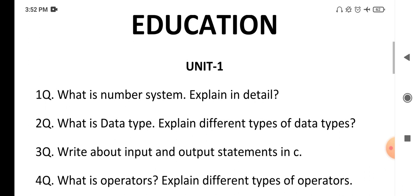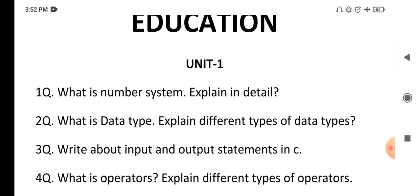The next question is: what is a data type and what are the different types of data types? A data type is nothing but a type of value which we can store in a variable. Without the data type concept, we are unable to store any value in a variable. Before creating a variable, you decide what type of value you want to store, and for that we use data types. In C language, we have many different types: integer, float, double, character, short int, long int, and many more.